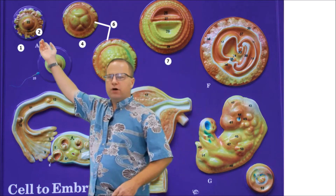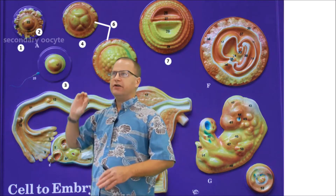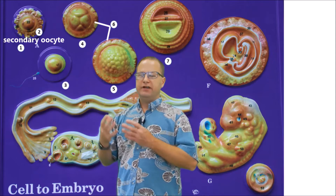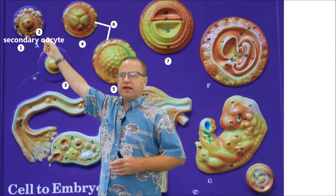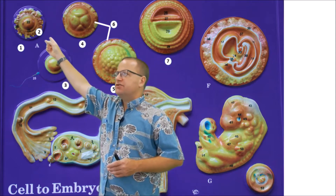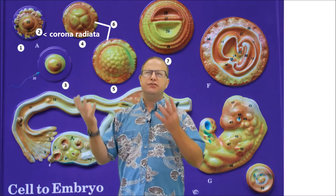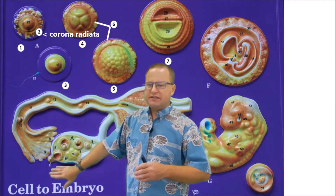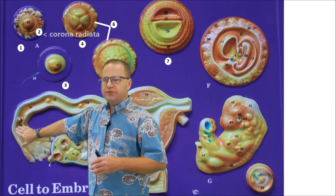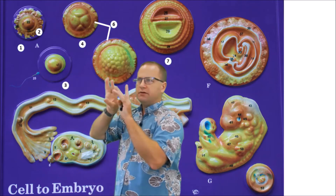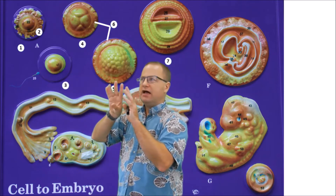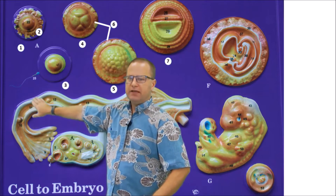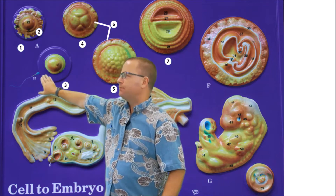First of all, up top, number one, is our secondary oocyte. It was ovulated from her ovary under the direction of luteinizing hormone, and it is surrounded by a ring of cells, which is called the corona radiata. These are just remaining granulosa cells. Now, where this is going is it's moving up the fallopian tube, being propelled by those little cilia that line the fallopian tube, and ideally about a third of the way down that fallopian tube, it meets up with a spermatozoa.